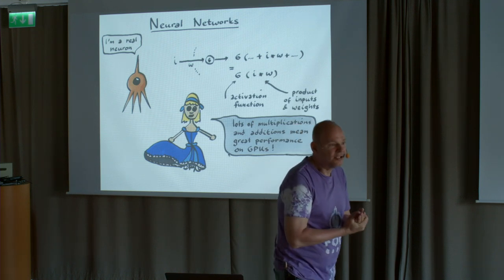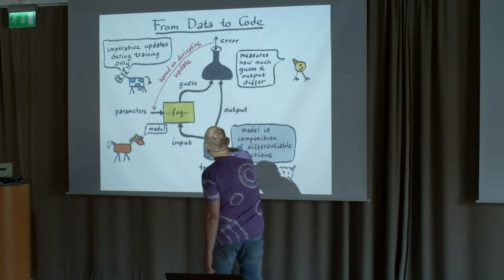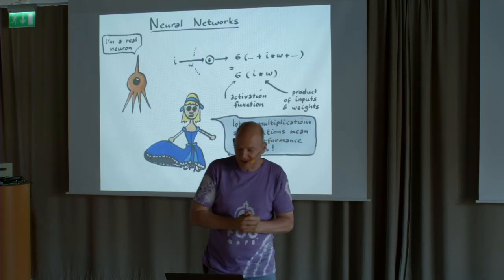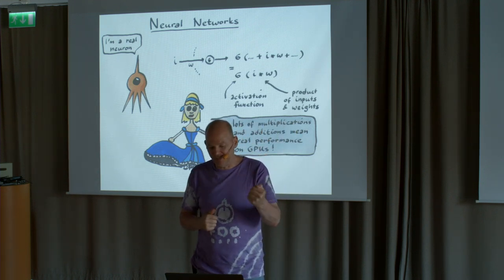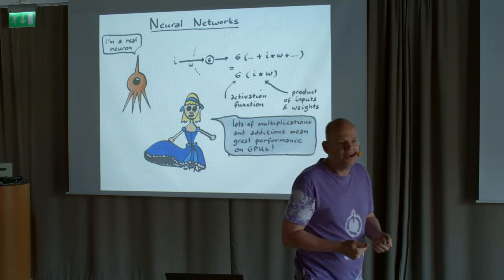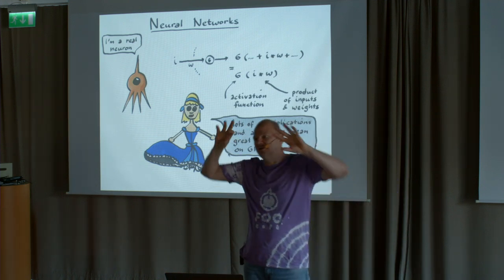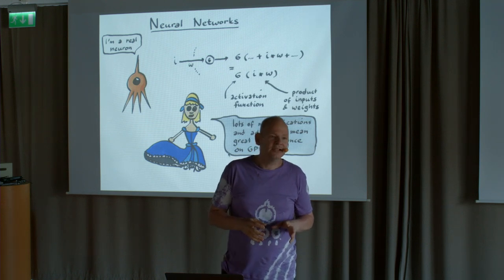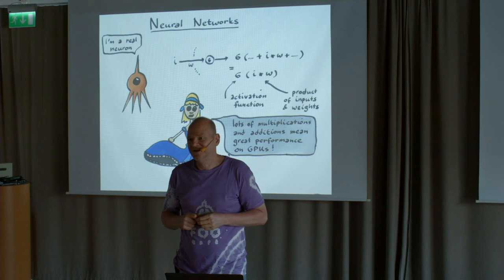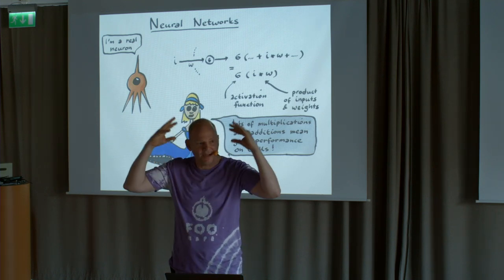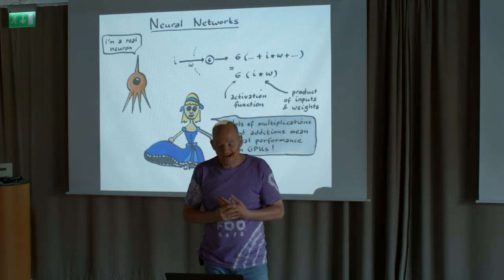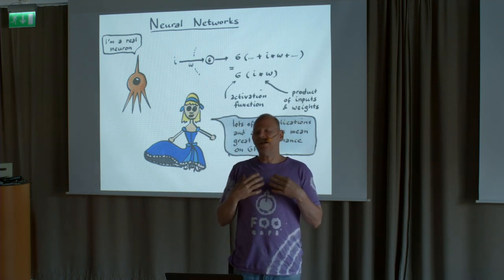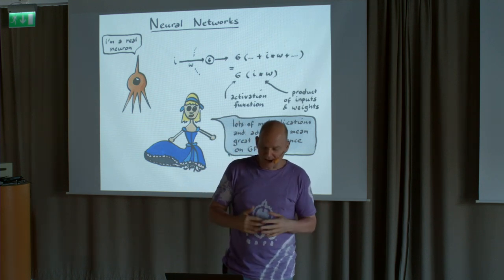What is a neural network? A neural network is just something where the functions in the model have a certain shape — what people call activation functions — and they multiply the inputs with the weights. Why is that useful? Some people think it has something to do with neurons in your brain, but I don't believe so. I think it's because if you have multiplications and additions, you can do this very efficiently on your graphics card. Picking functions that require lots of additions and multiplications means we know how to do that efficiently. I don't really believe the biological analogy.